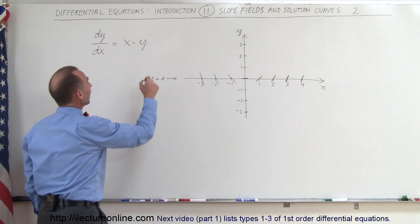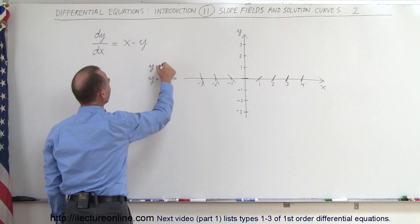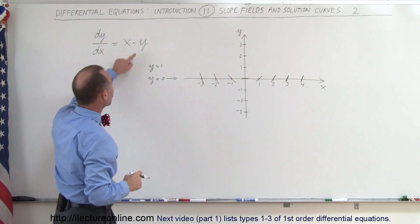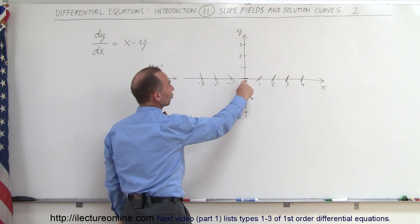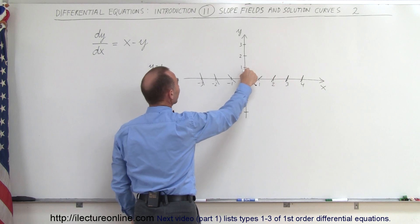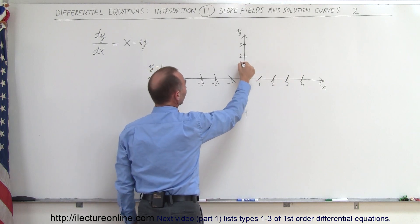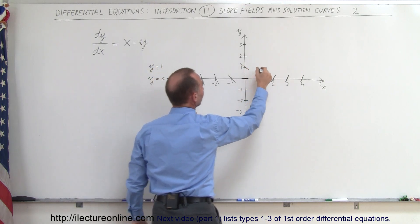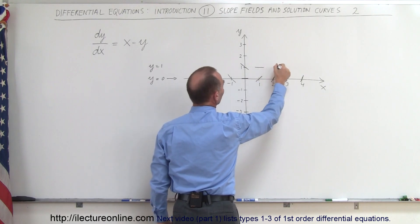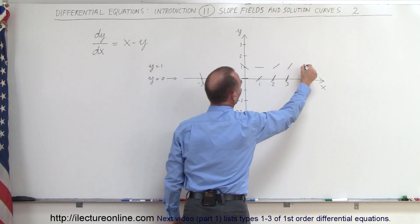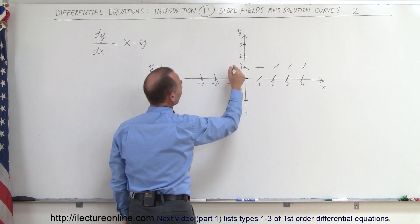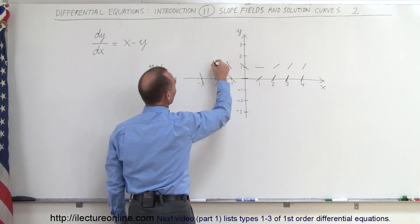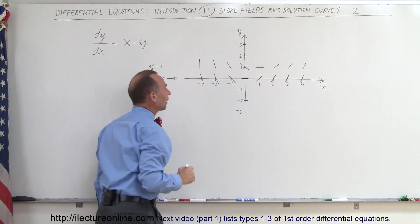Now let's go to y equals 1. That means I have to subtract 1 from the slope as I go across the line. So here the slope is 0, but here the slope would be negative 1 because 0 minus 1 is negative 1. The slope here would be negative 1, here 0, here 1, the slope is 2 and 3. Here the slope would be negative 2, negative 3, and negative 4.